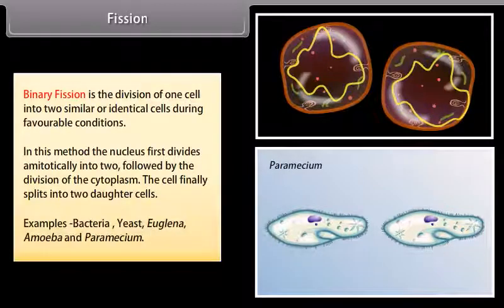Examples of binary fission include bacteria, yeast, Euglena, amoeba, and paramecium.